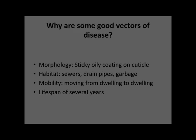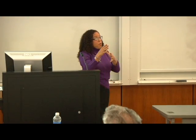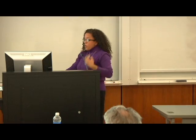Why are some cockroaches good vectors of disease? Part of this has to do with the fact that cockroaches have a waxy cuticle and a sticky, oily coating, which allows different pathogens to become stuck to their surface. Cockroaches like Periplaneta tend to inhabit sewers, drains, and garbage, coming into contact with pathogens that stick to this oily, waxy cuticle. Cockroaches are highly mobile, moving from dwelling to dwelling, allowing these pathogens to be transported. Some cockroaches, like Periplaneta americana, can live four to five years, giving them the ability to transport pathogens over a long period of time.